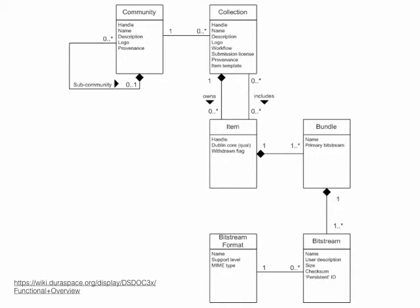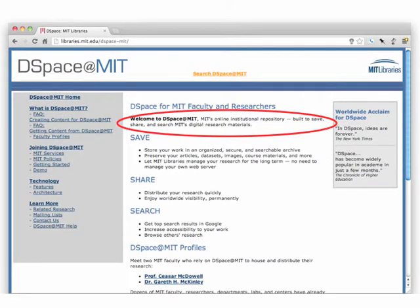But before we delve into the DSpace data model, let me give you just a little bit of history. DSpace — this is the web page for the DSpace instance at MIT, which is where DSpace was originally developed. DSpace was developed at MIT to be the platform for MIT's institutional repository, the place where all kinds of materials would get stored: published and unpublished manuscripts, reports, theses, dissertations, syllabi, lecture notes, memos, raw research data — you name it.